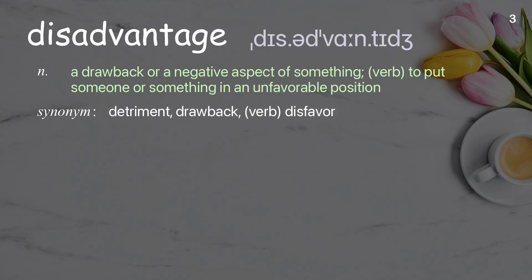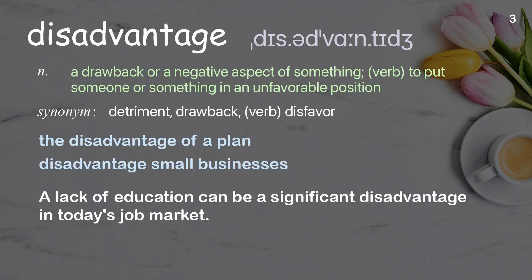Disadvantage: A drawback or a negative aspect of something. Verb: to put someone or something in an unfavorable position. Examples: The disadvantage of a plan. Disadvantage small businesses. A lack of education can be a significant disadvantage in today's job market.